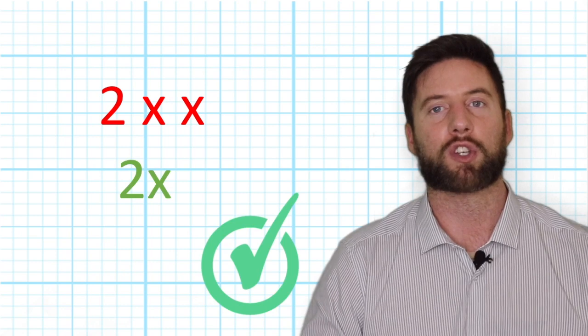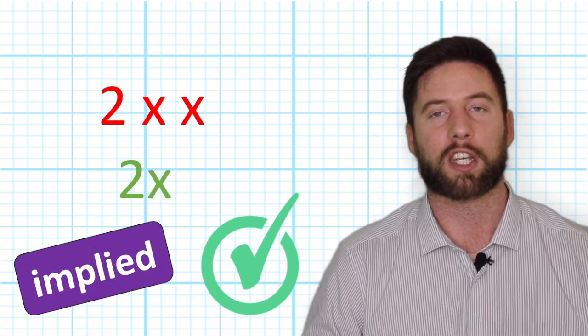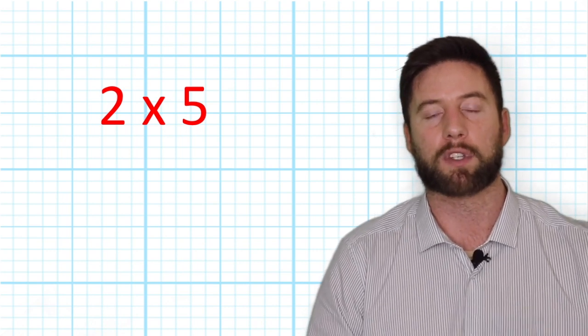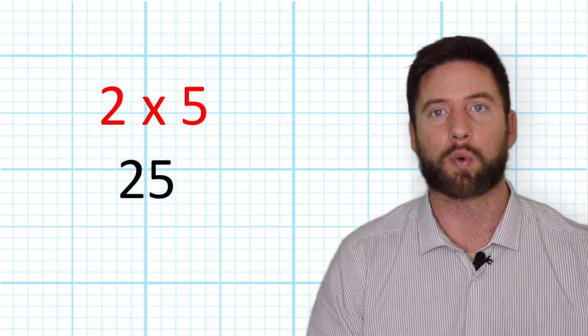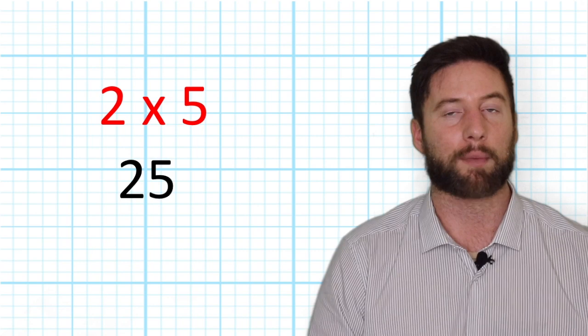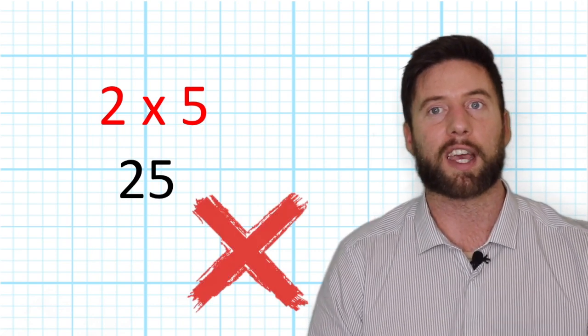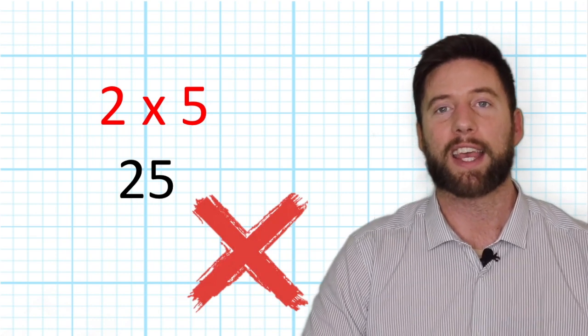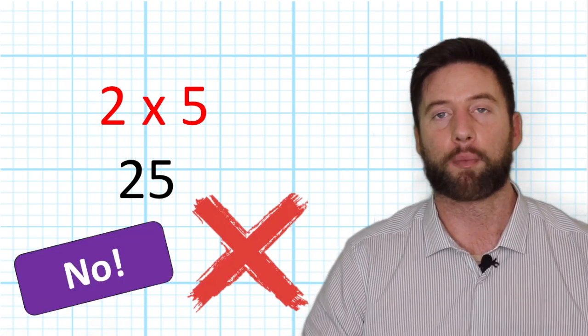However, we can't use it for just two numbers, two quantities, because if we wanted to show 2 times 5 and we remove the times symbol, it would show 25. And 25 is not the same as 2 times 5. So if we're putting two quantities together, we will still see that multiplication sign. But it will still be the case if we are using parentheses or brackets.